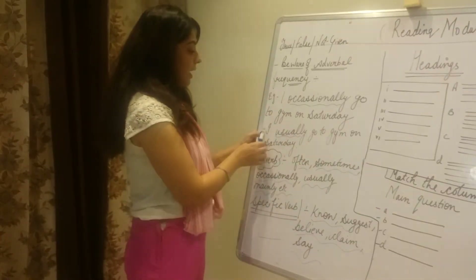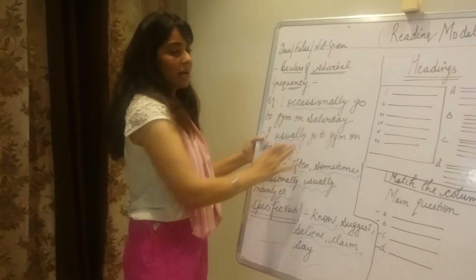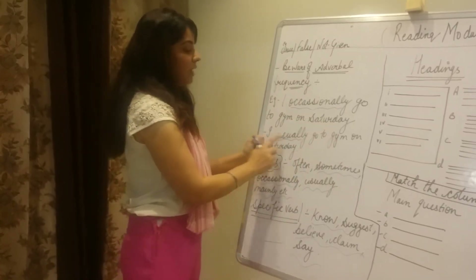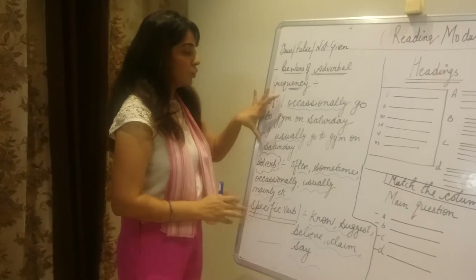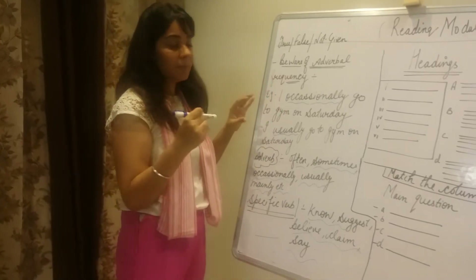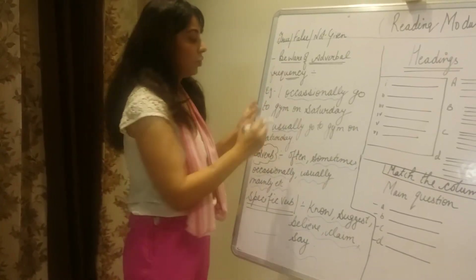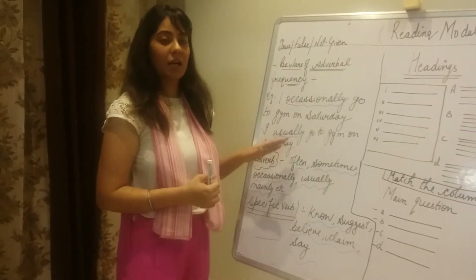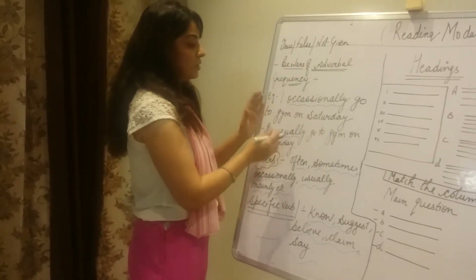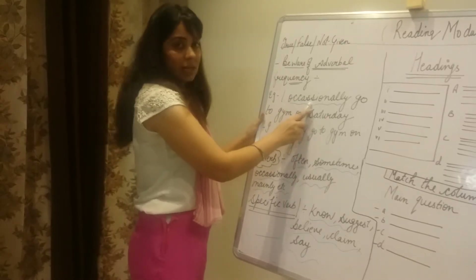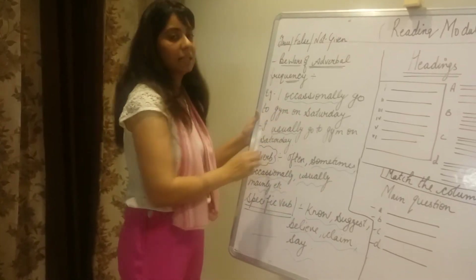And if you have in your question something like 'regular' — you may feel like you have all the keywords match and this is true, but actually this is not true, this is a contradiction. Why? Because 'occasionally' as an adverb and 'usually' as an adverb — both senses are different.